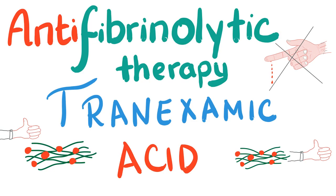We have talked about anti-platelets before, and we have talked about the fibrinolytics before. Anti-platelets include aspirin and the P2Y12 receptor inhibitor such as clopidogrel, the GP2B3A inhibitor such as Epsiximab, and the phosphodiesterase inhibitor such as dipyridamol and cilostazol.